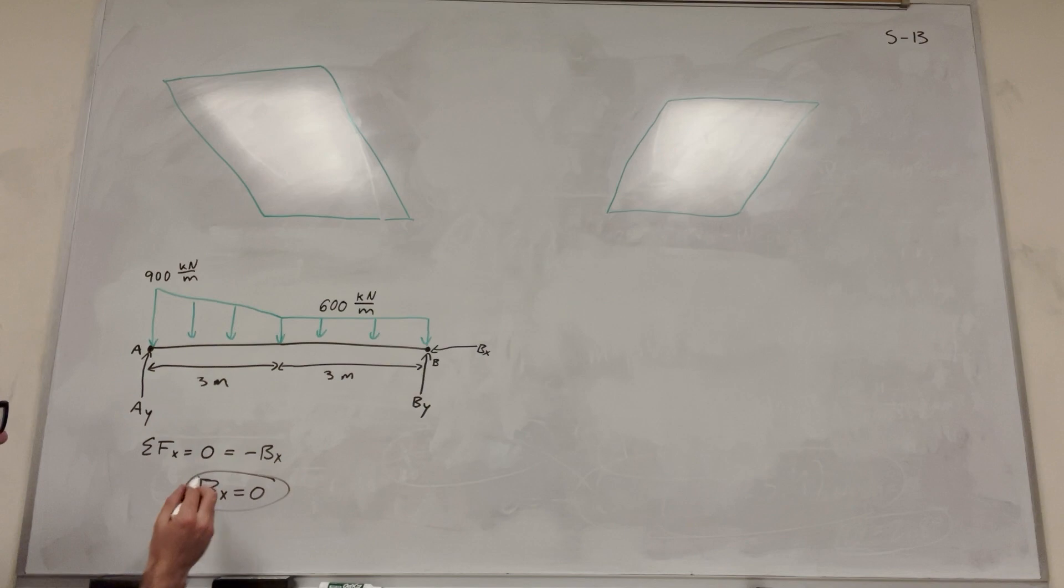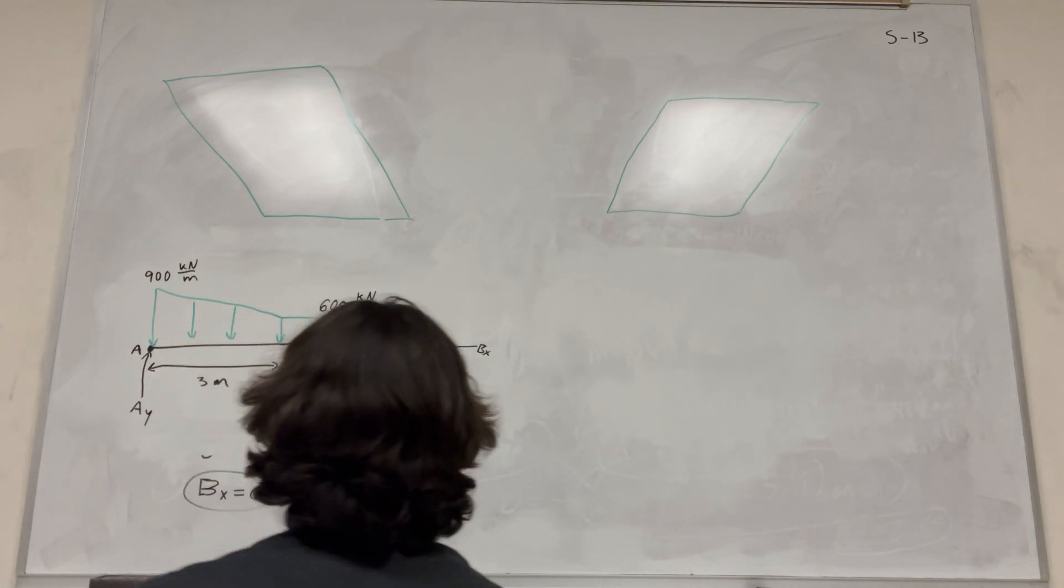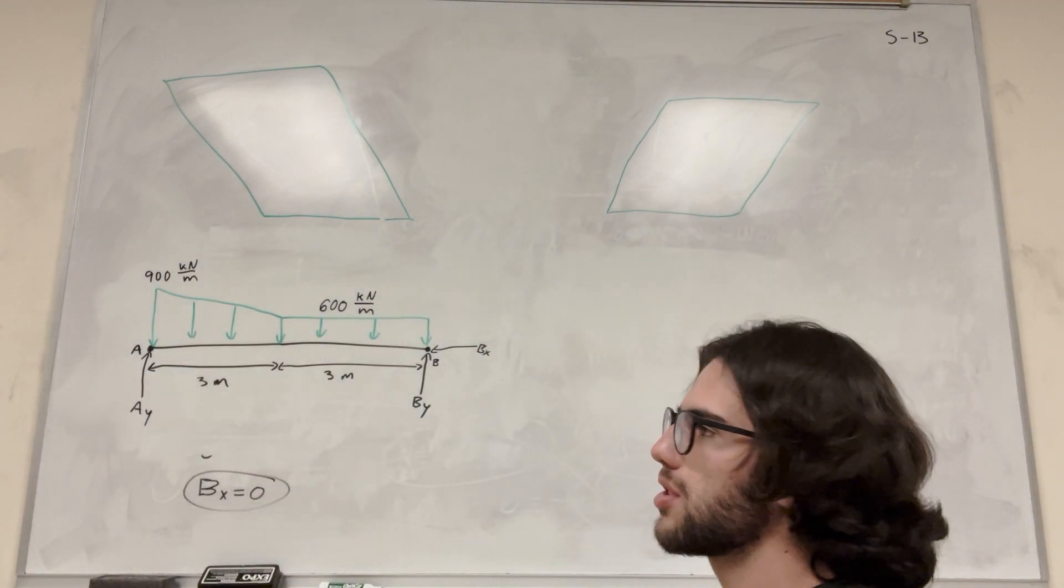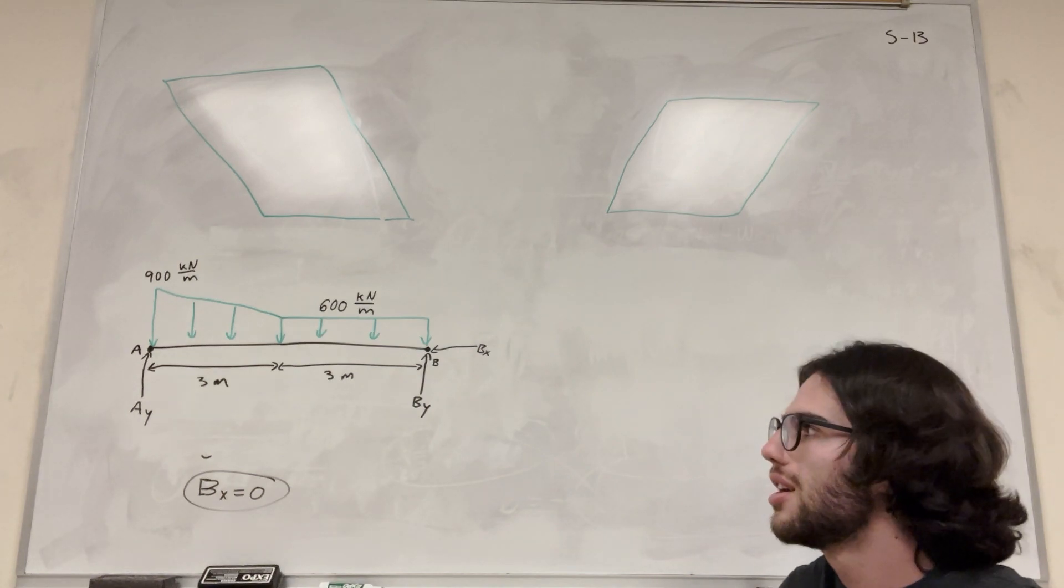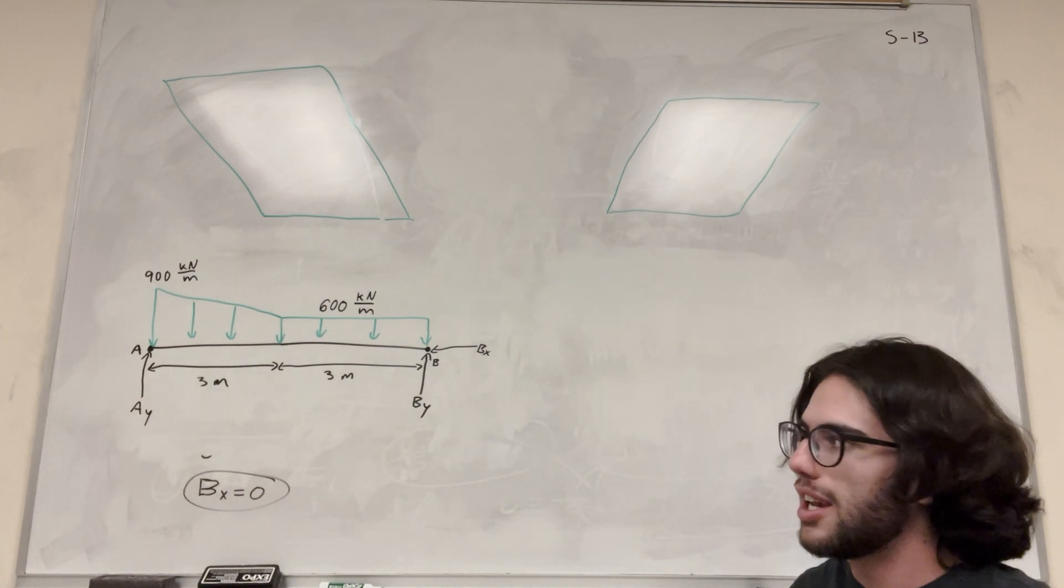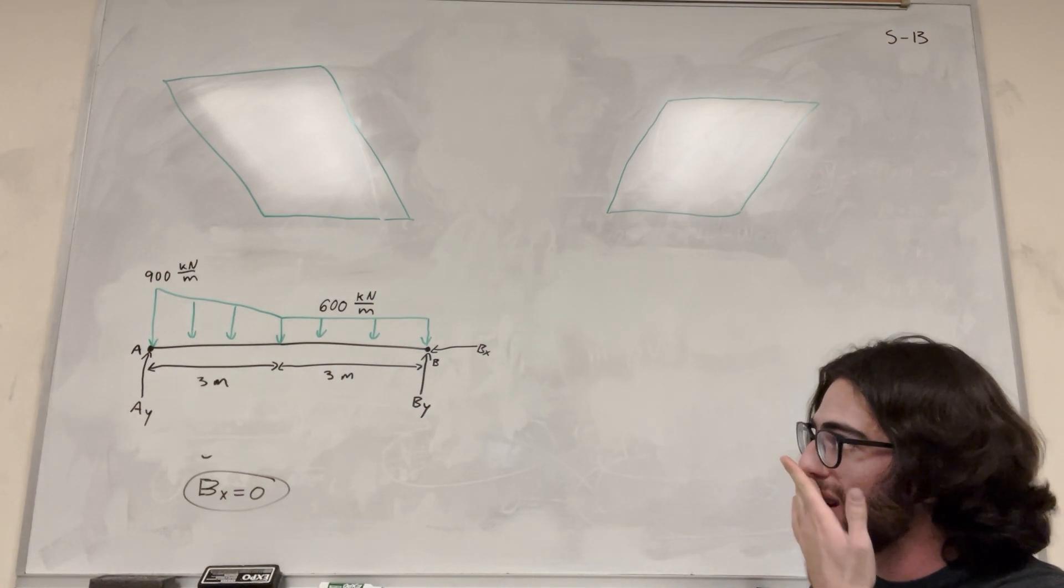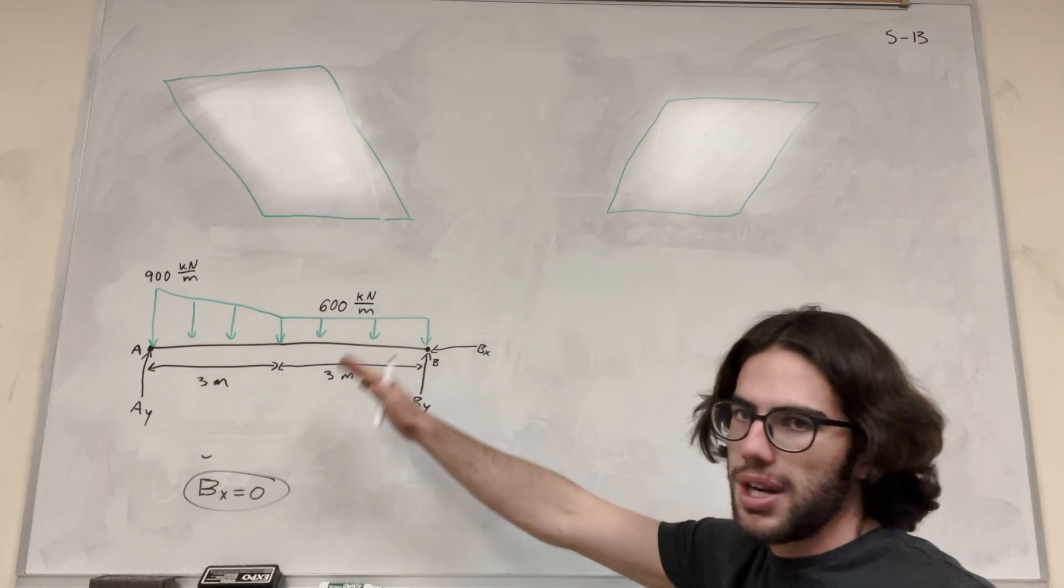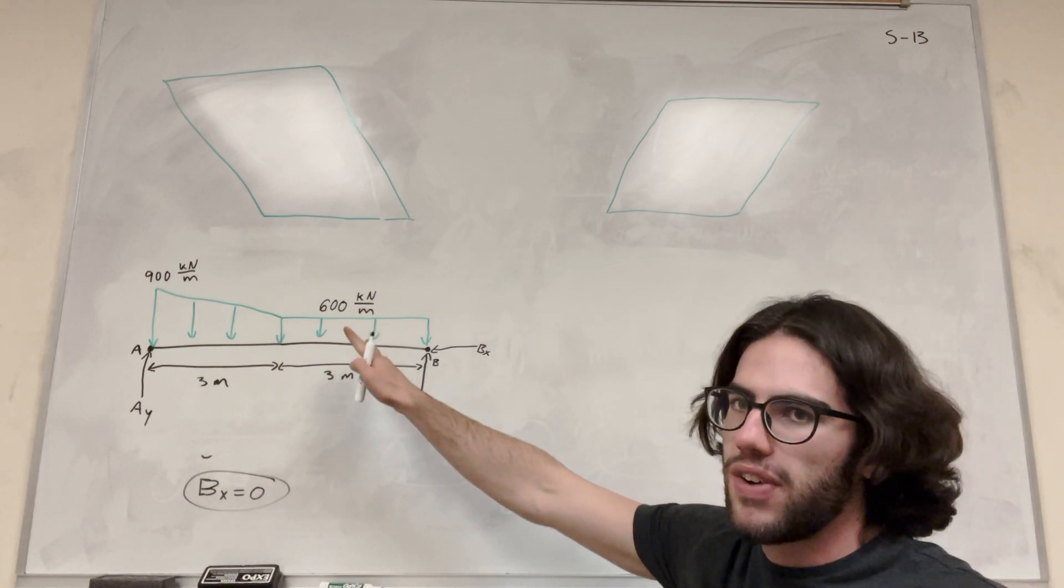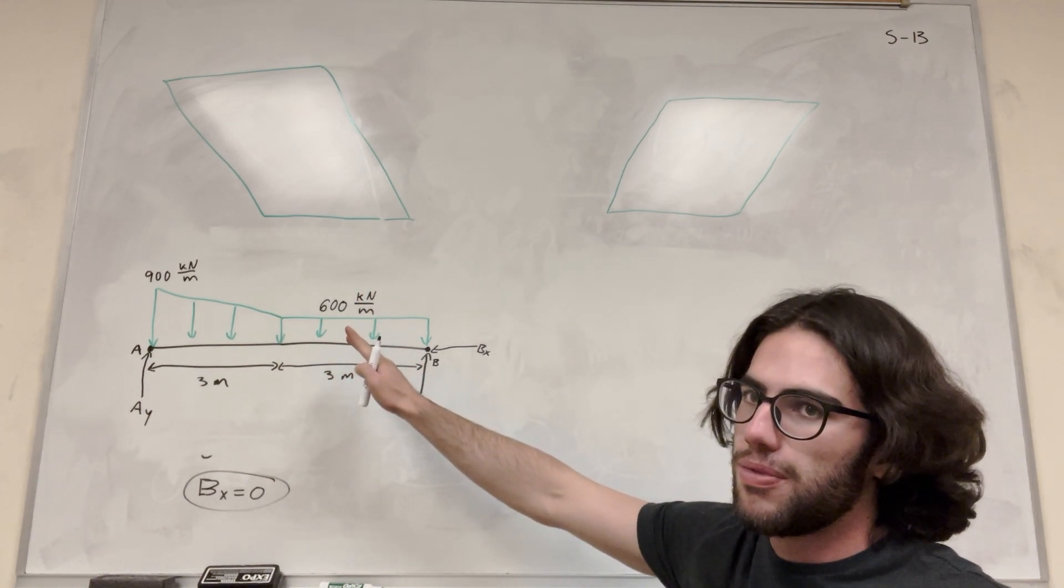So B_x equals zero. Alright, so nice. So the next part, we have two unknowns and if we do sum of forces in the Y direction, we're still going to have two unknowns. So we're going to need to use moments for this. To use moments, we're going to need to know what these distributed loads are and where they act. So we want to simplify these distributed loads into a new force body diagram.